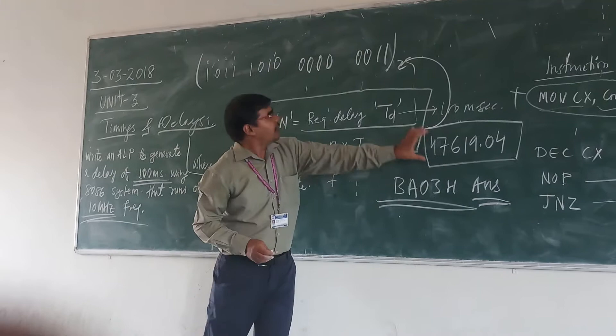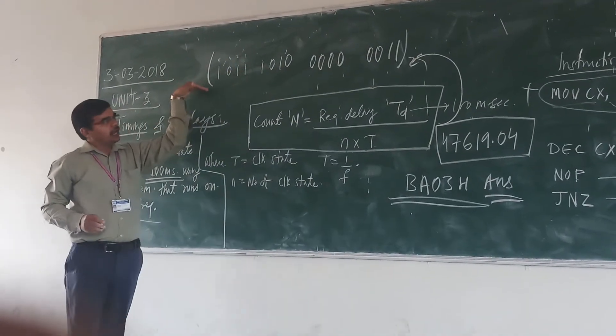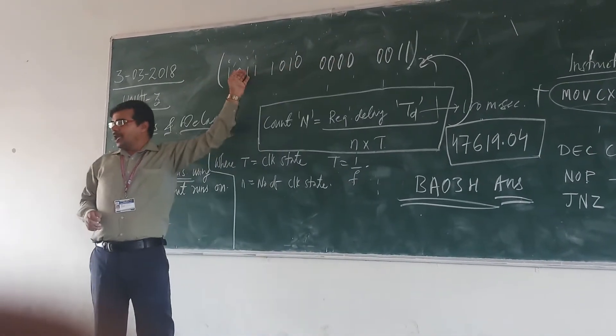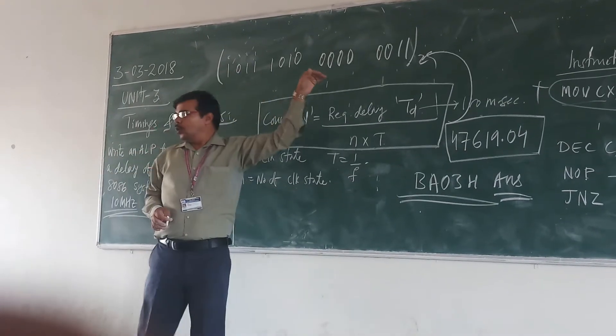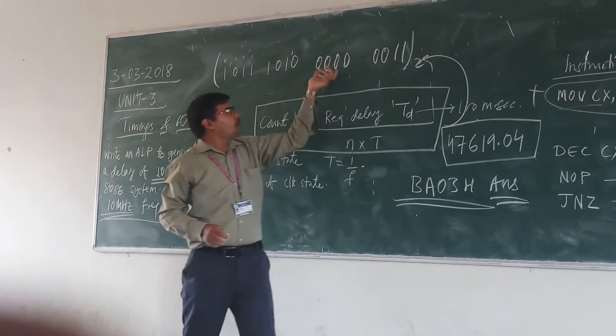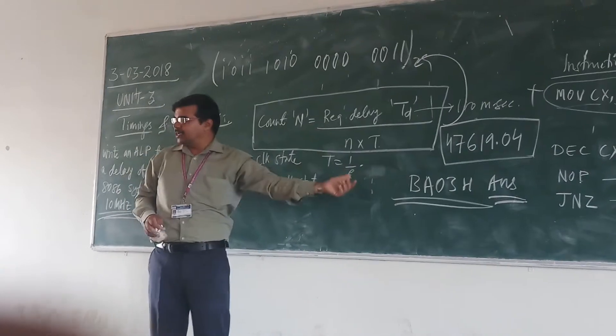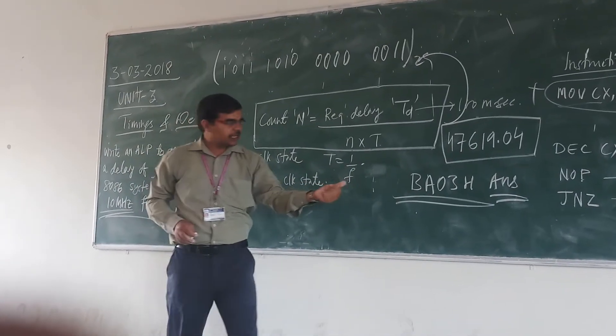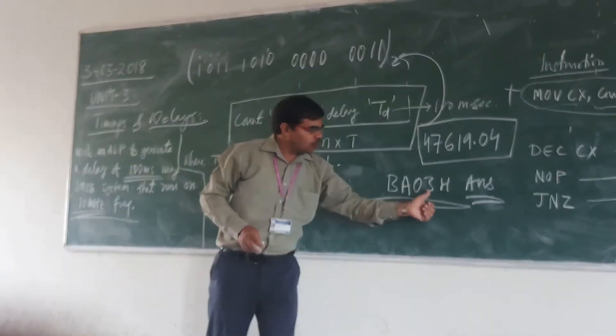So this decimal we need to convert into binary. And for binary, we make groups of 4 and convert it into hexadecimal. So the required answer is BA03H.